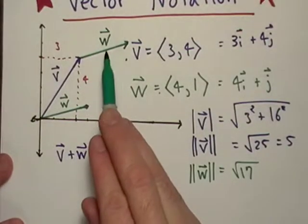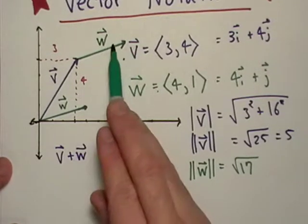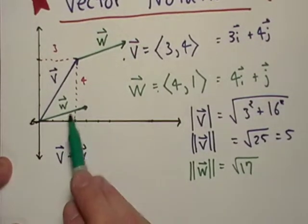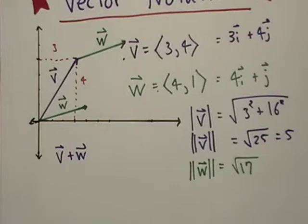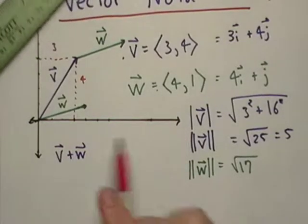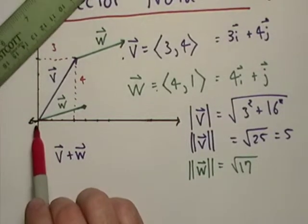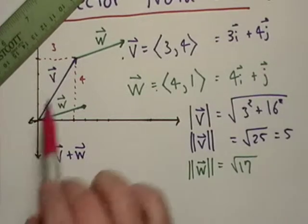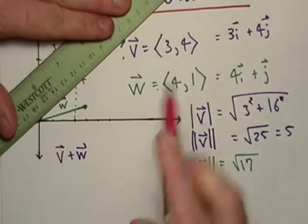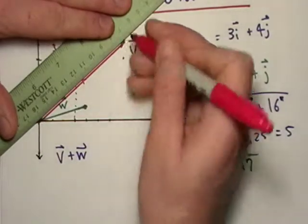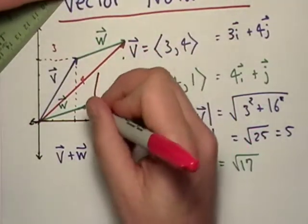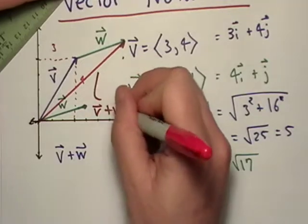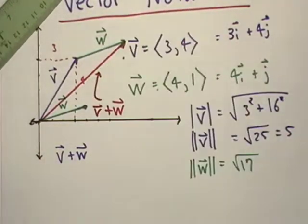Here is vector w. Since this vector has the exact same magnitude and direction as the original w, I can call it vector w. The resultant vector goes from the original point of my first vector to the terminal point of the vector I just tacked on. This right here is vector v plus w.